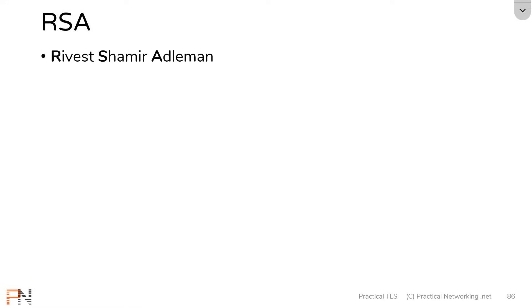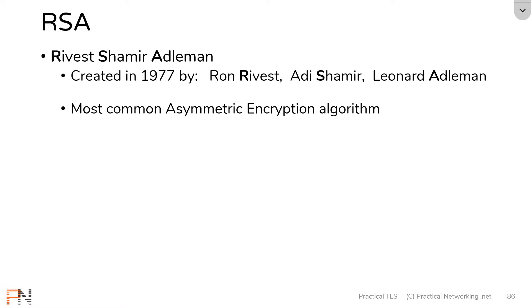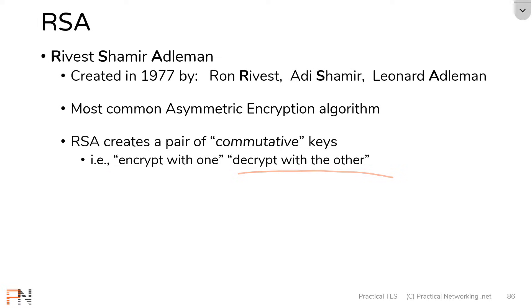RSA stands for Rivest, Shamir, and Adleman. That's actually the last name of the three gentlemen that created the algorithm back in 1977. RSA is by far the most popular asymmetric encryption algorithm in use today. What RSA does is it creates a pair of commutative keys. What that means is you get a set of keys where you can encrypt with one of the keys and decrypt with the other, and it doesn't matter which order you go in.